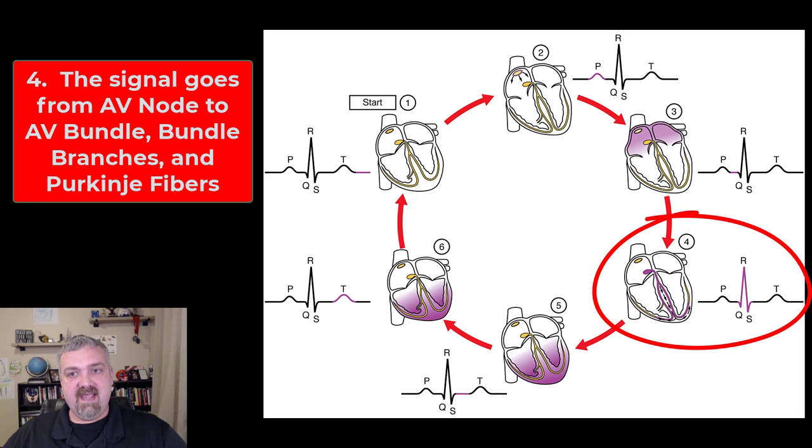So then we have number four. Now the signal after this hundred millisecond delay, the signal is now going from the AV node to what's called the atrioventricular bundle, which when I was in school was called the bundle of His. You might still hear it called that. And then it's going to go into your left and right bundle branches, all the way down to the apex of the heart at a word called the Purkinje fibers. And they're going to travel back up.